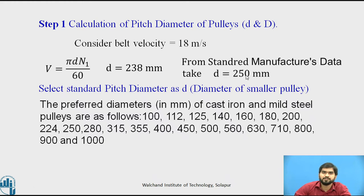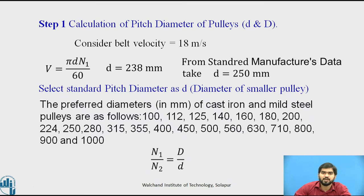From the manufacturing data book, take d = 250 mm. Using the speed ratio equation — with input speed, output speed, and d = 250 mm — calculate the diameter of the larger pulley, capital D. Substituting the values, we get D = 1000 mm, and yes, this value is available in the standard sizes.